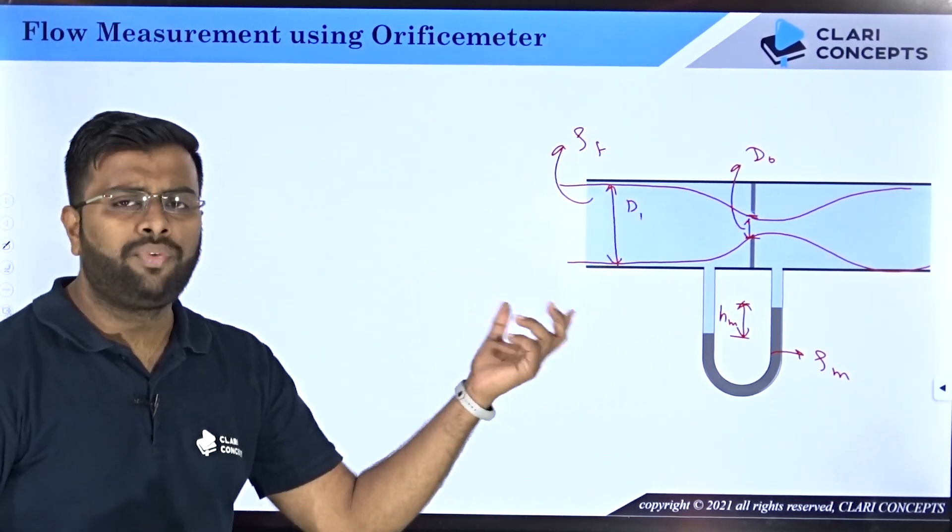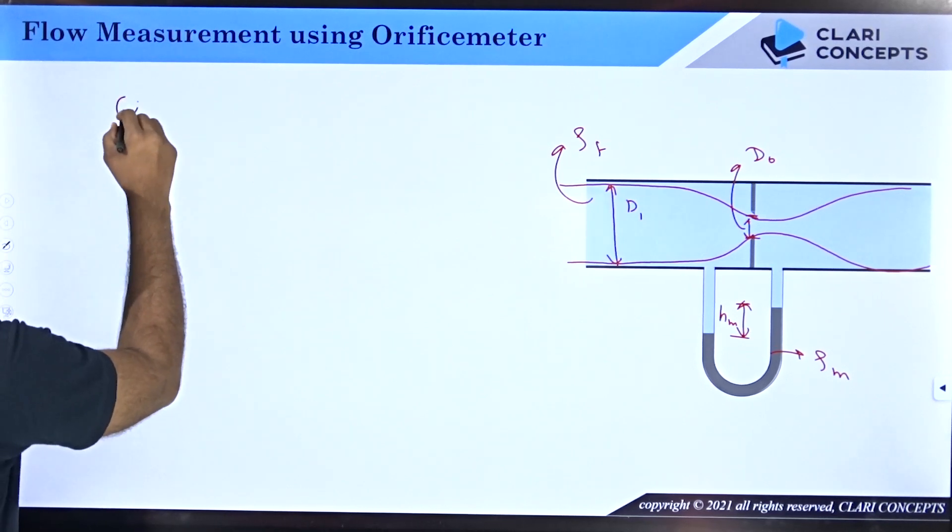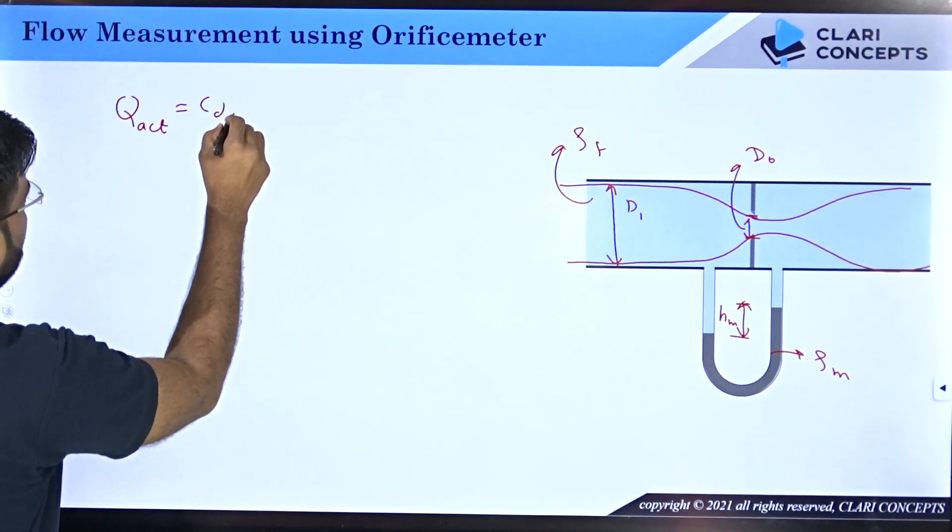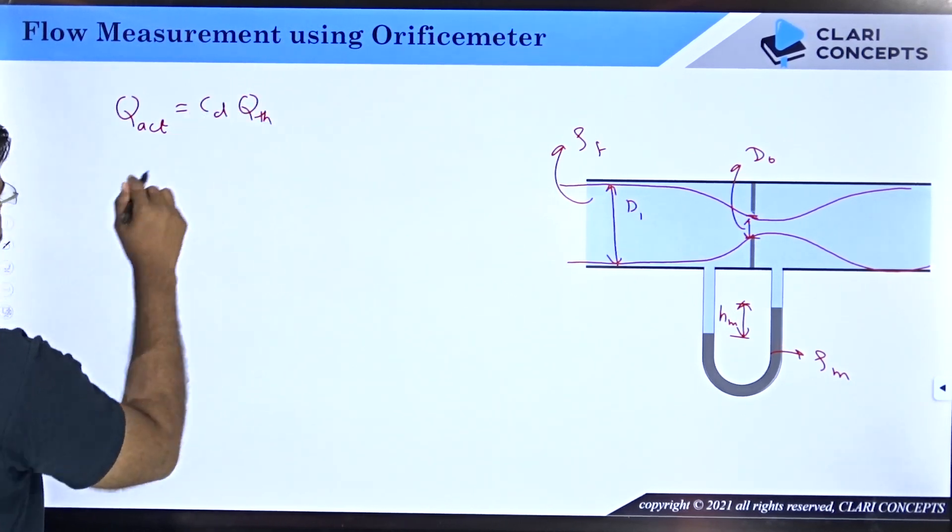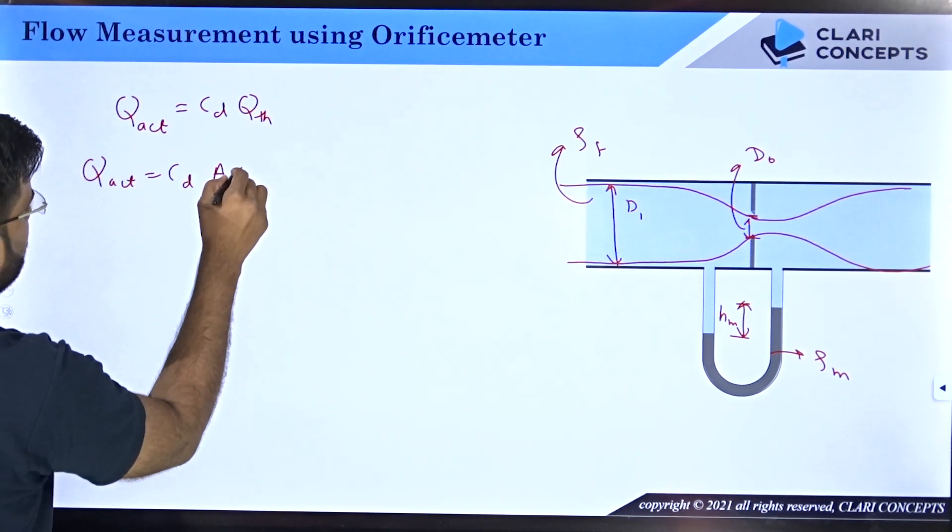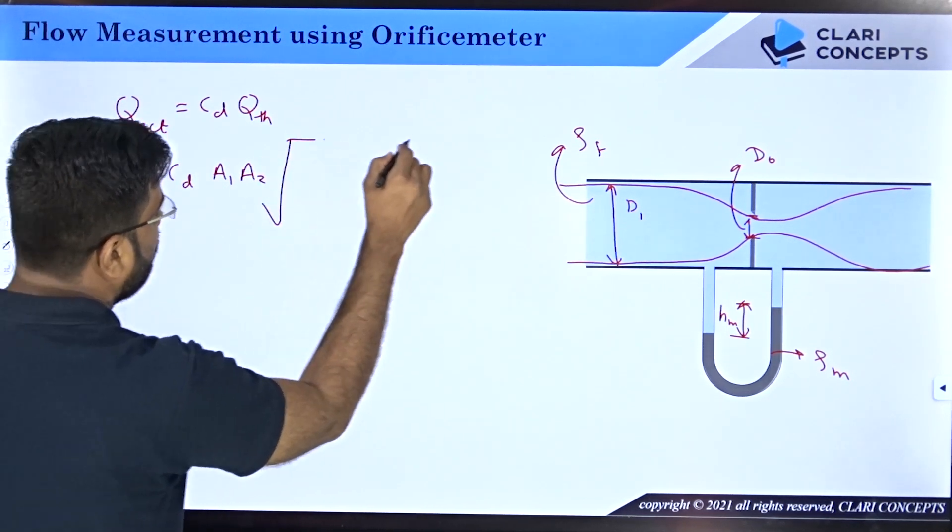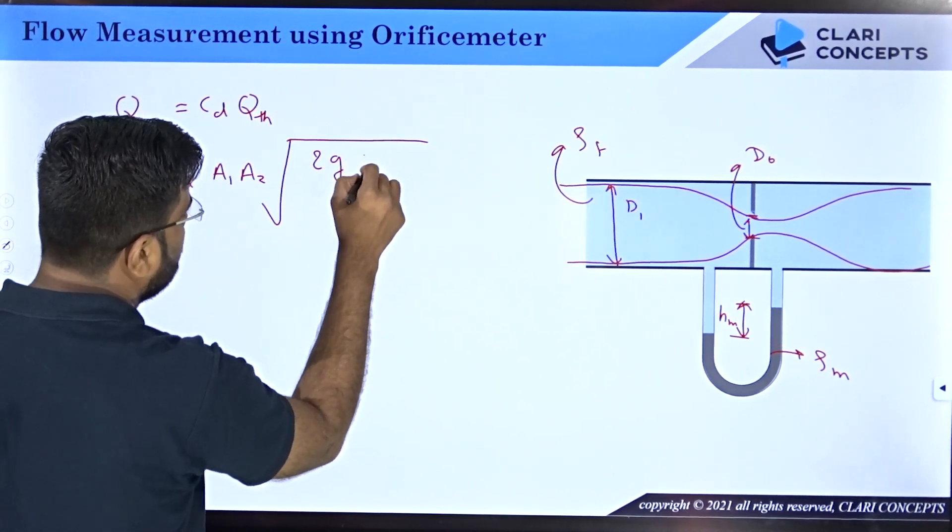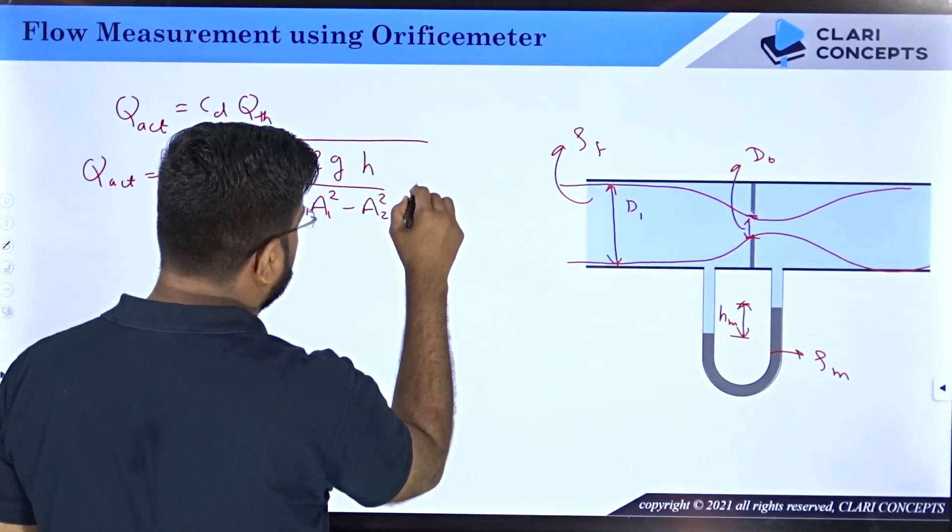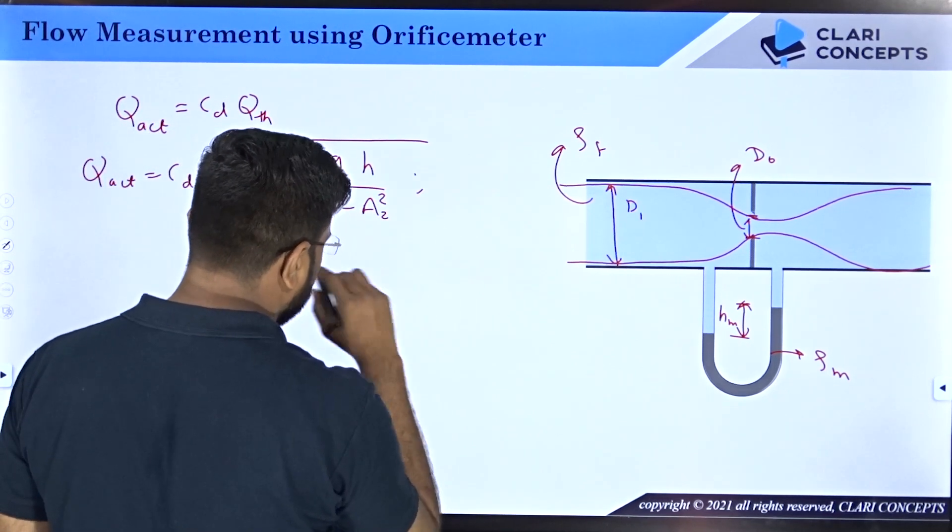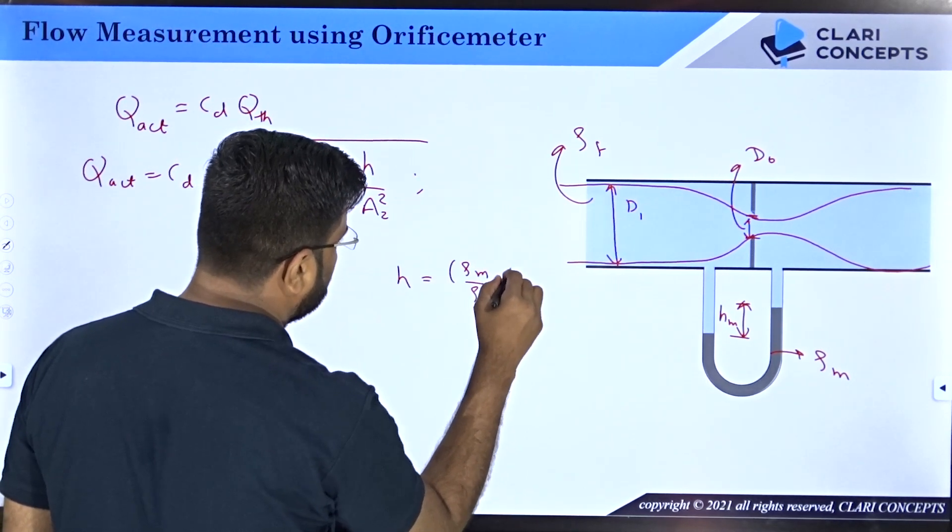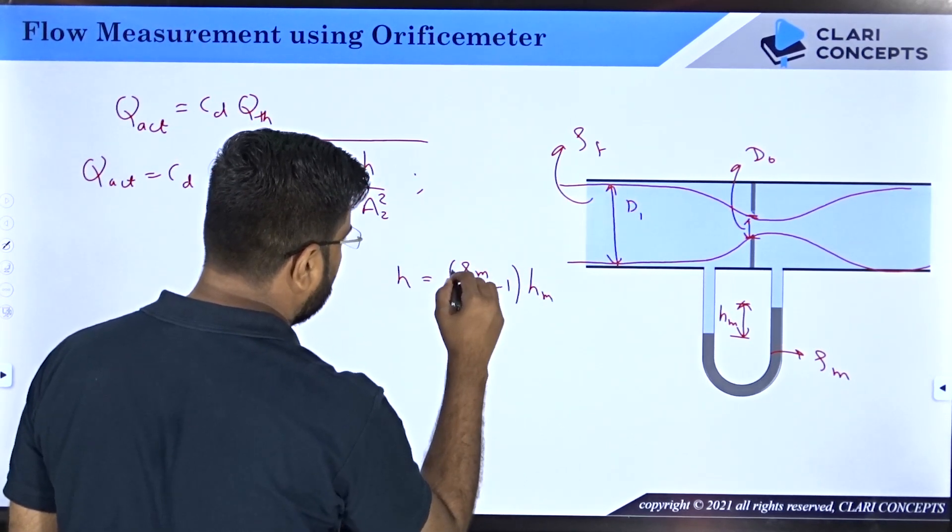The same mechanism is there, the same formula you will get as we did in the venturimeter. I will not derive the final formula, I will just put the final formula. In the case of venturimeter we said that Q_actual equals C_d multiplied by Q_theoretical. Q_actual equals C_d into Q_theoretical was A_1 into A_2 under root of 2gh divided by A_1 square minus A_2 square, where the value of h was represented as h equals ρ_m by ρ_f minus 1 into h_m.